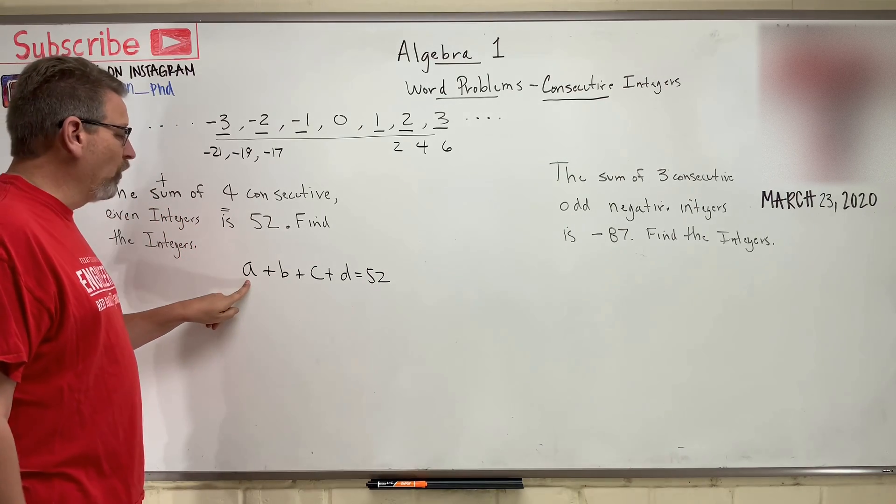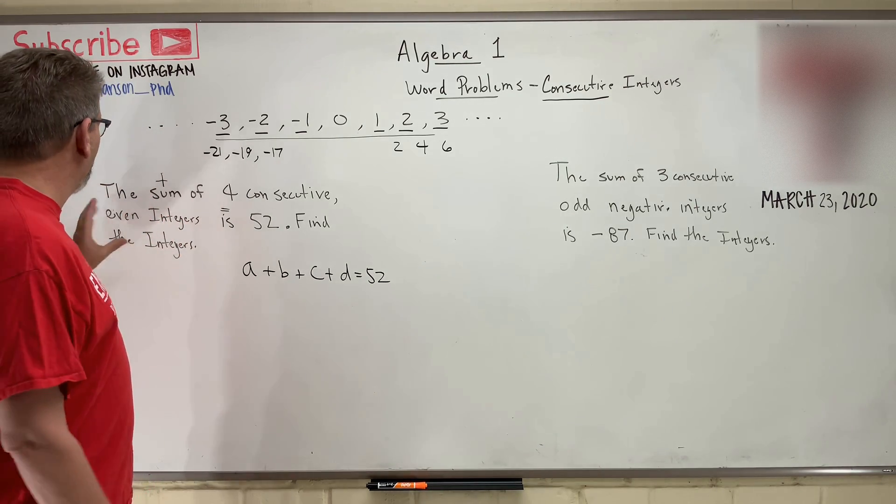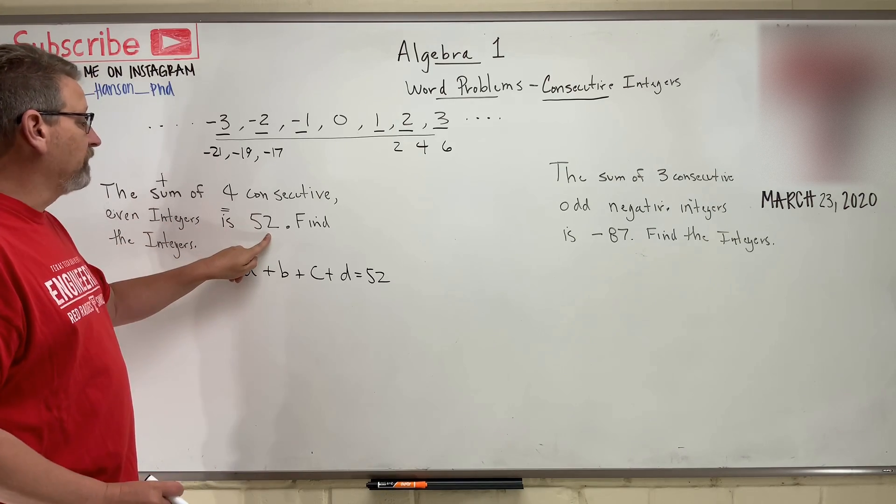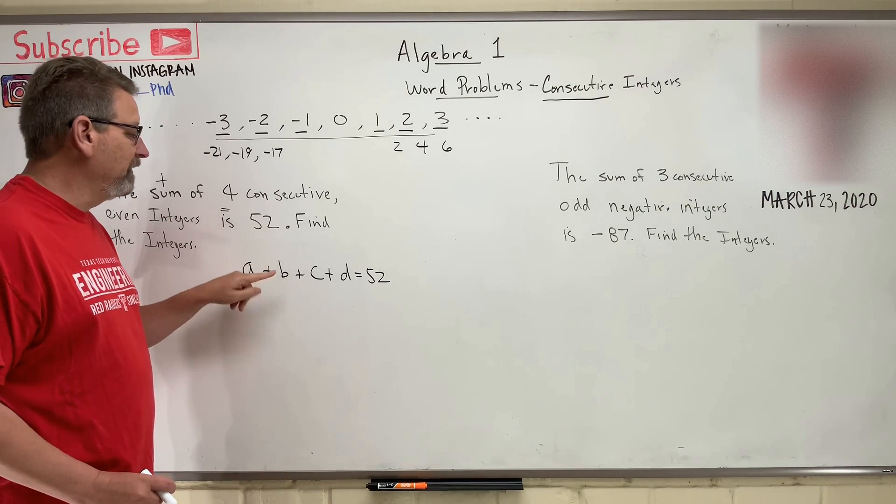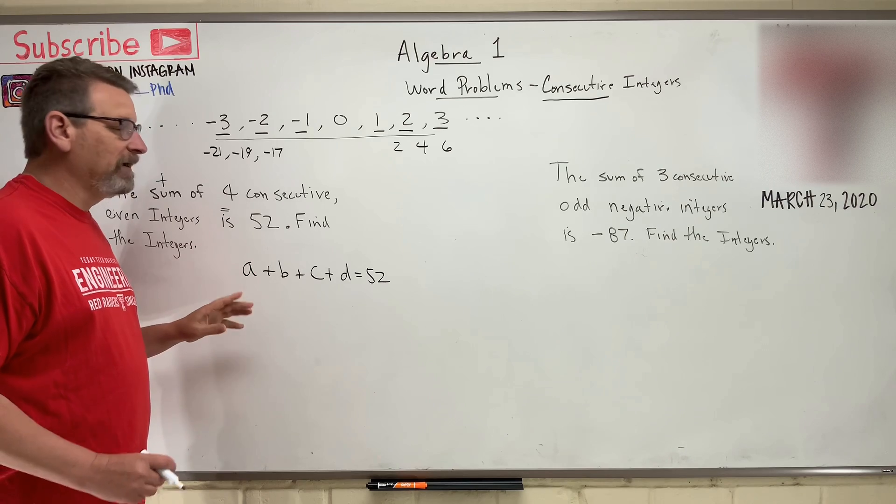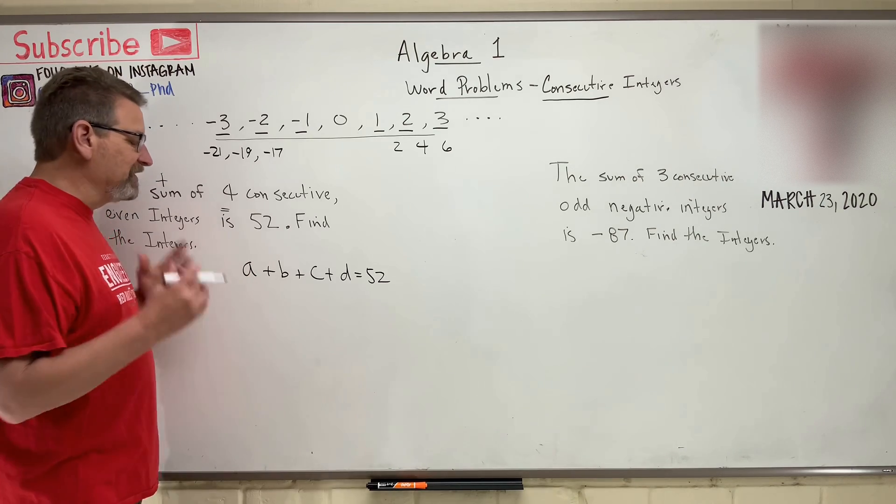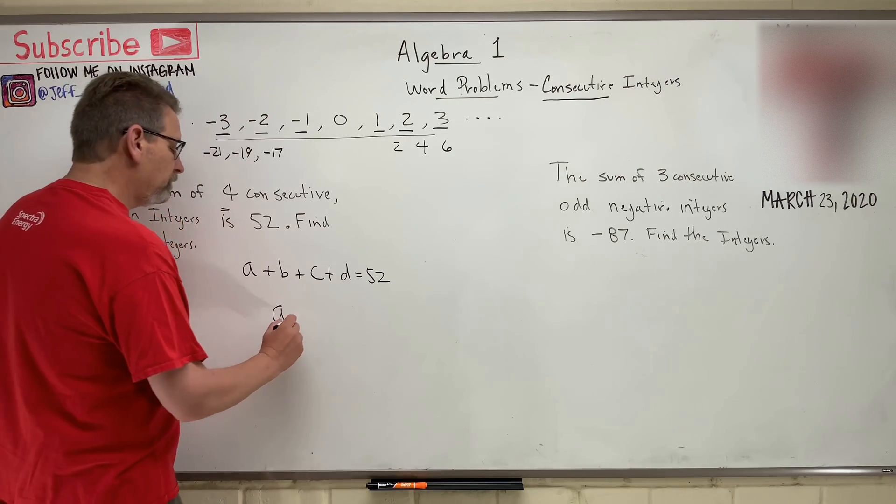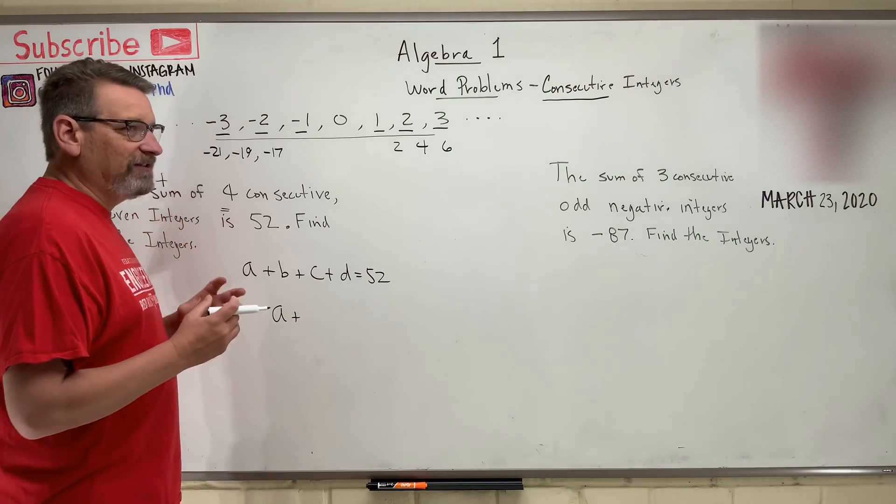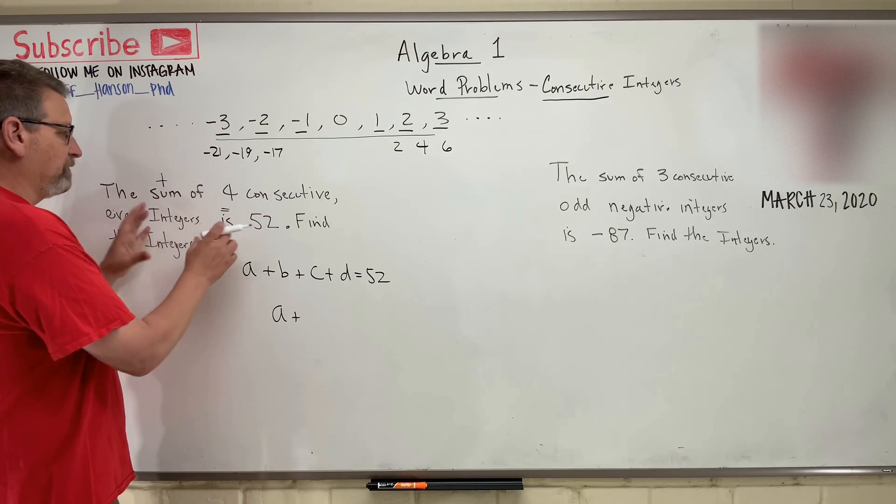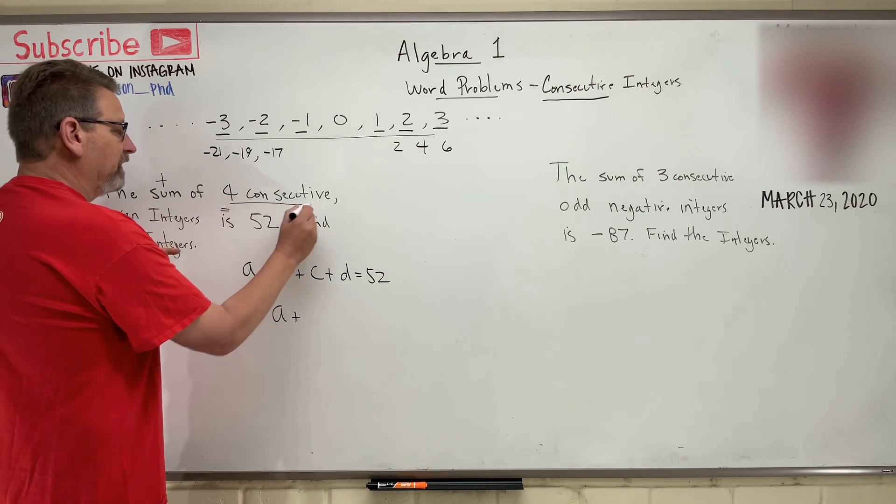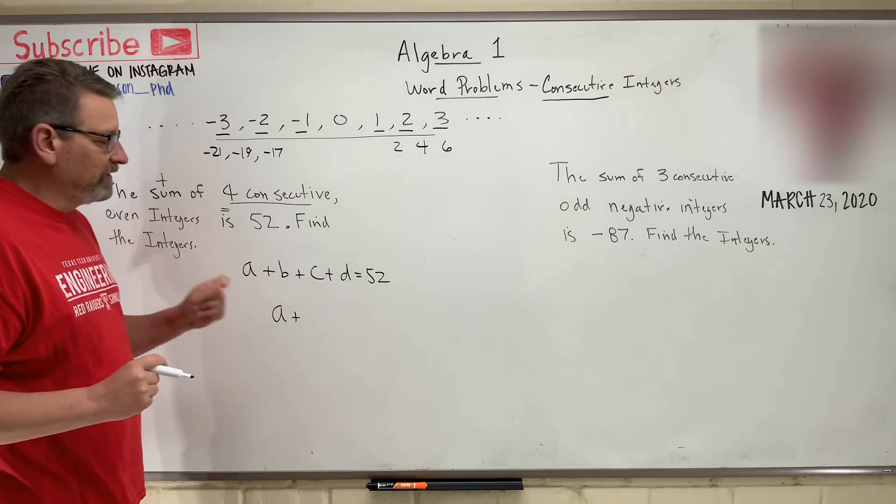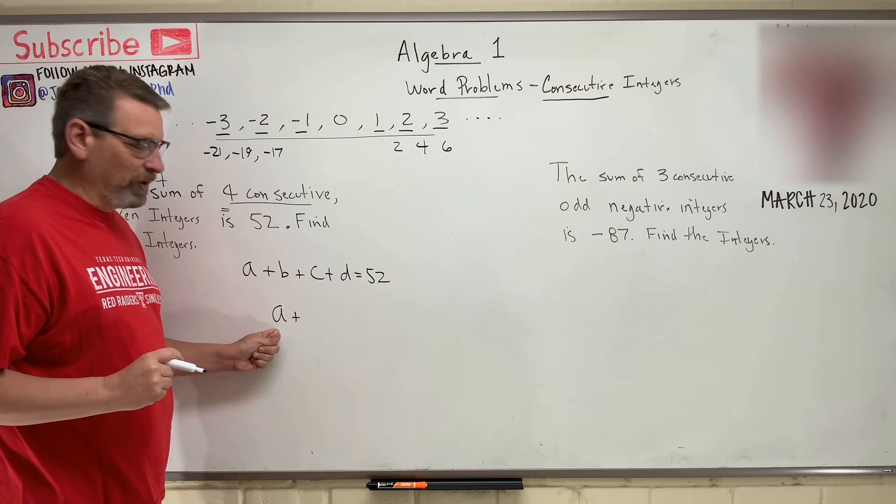So what do we know about this? So since we're talking about, let's say 52 is going to be positive integers, okay? This is a positive 52. What do we know about those integers? Let's just take one variable. Let's call him A, okay? So if A, let's say is the smallest, is the smallest of the four consecutive even integers. So A is the littlest guy. He's the smallest one.